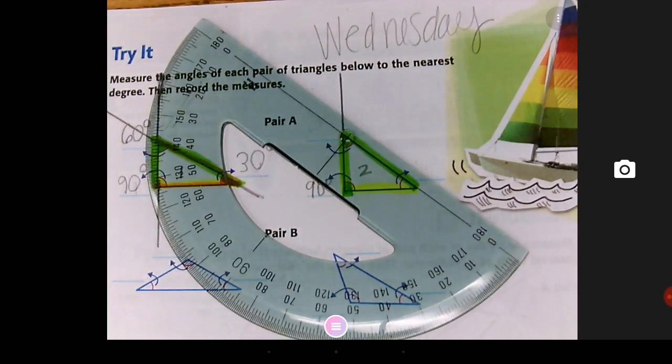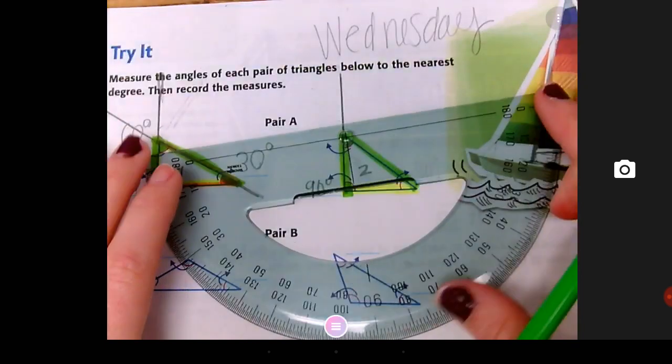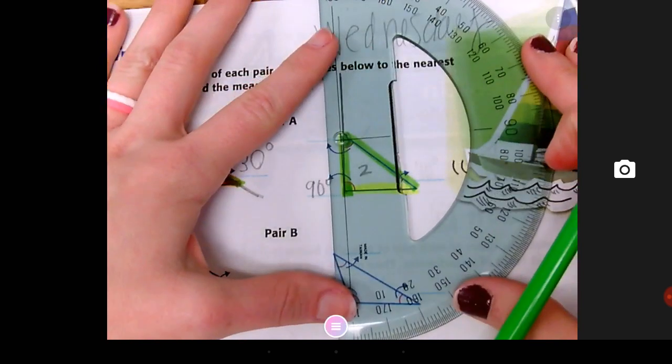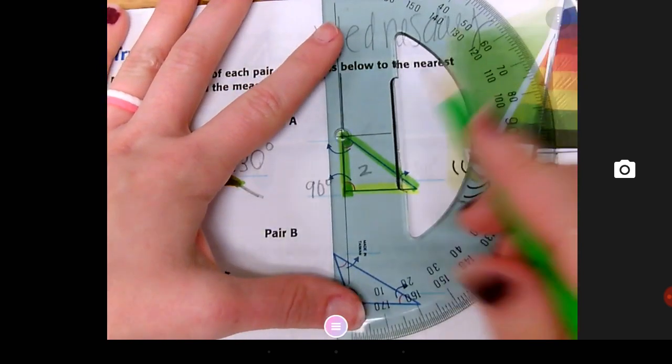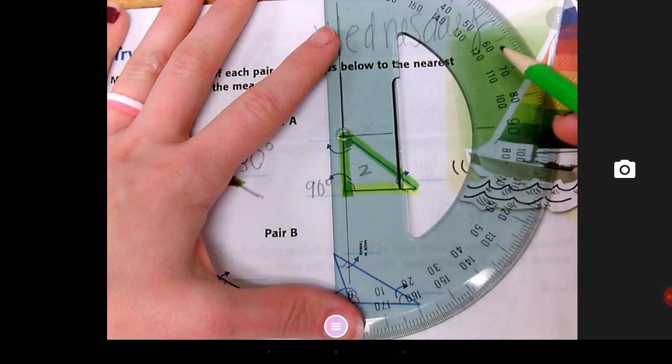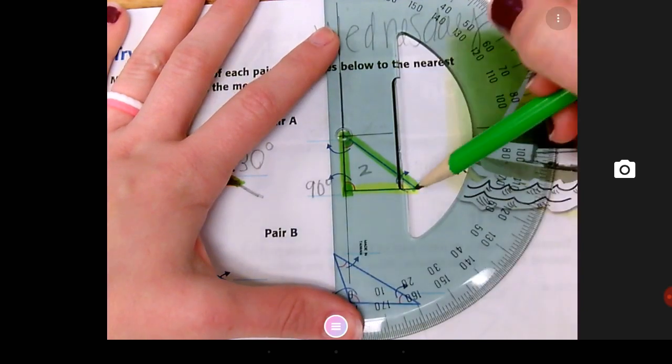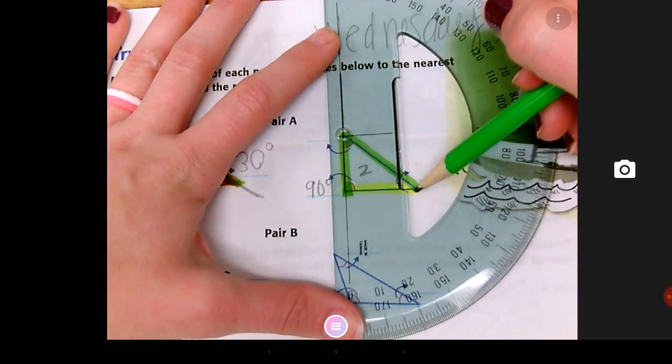Regardless of the way that you do it, you should still get the same measurement. You got it? So, I'm going to go back this way because it just makes more sense to me. Here's my resting line. Bubble on the corner. Resting line on zero. Here is the line I need to stop at.